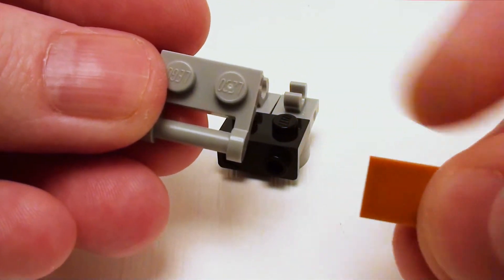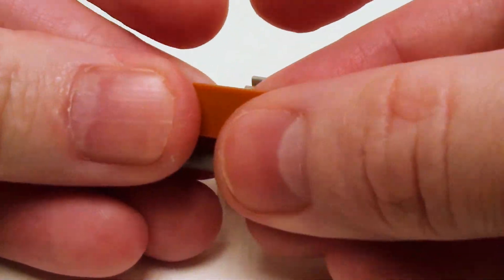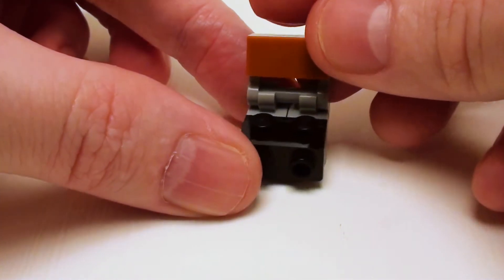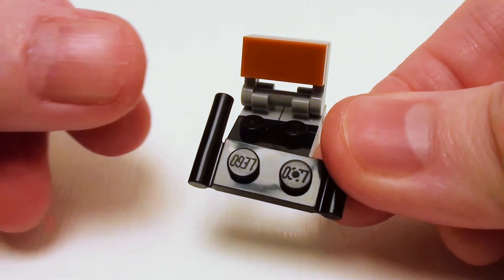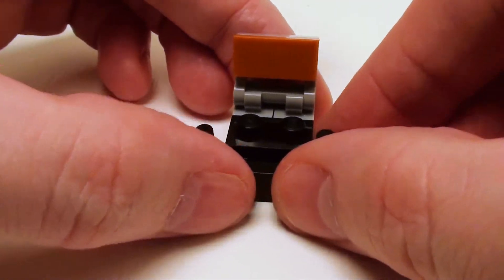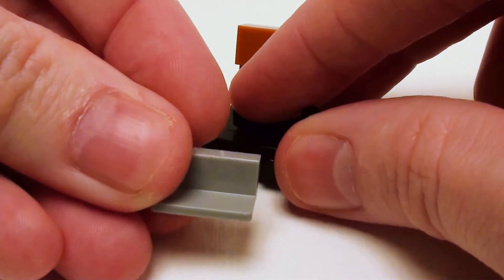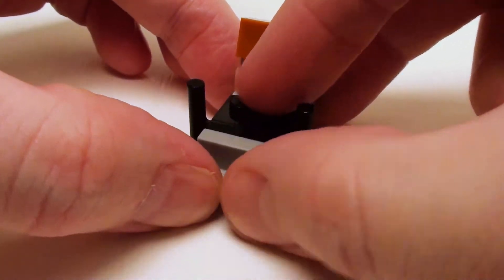For the back, take a 1 by 2 modified plate with stick. Let's place a 1 by 2 flat tile on the plate and set this right inside the holders. For the front, take a modified 1 by 2 plate with two sticks. Place this on the angular plate followed by a 1 by 2 by 1 wall element.